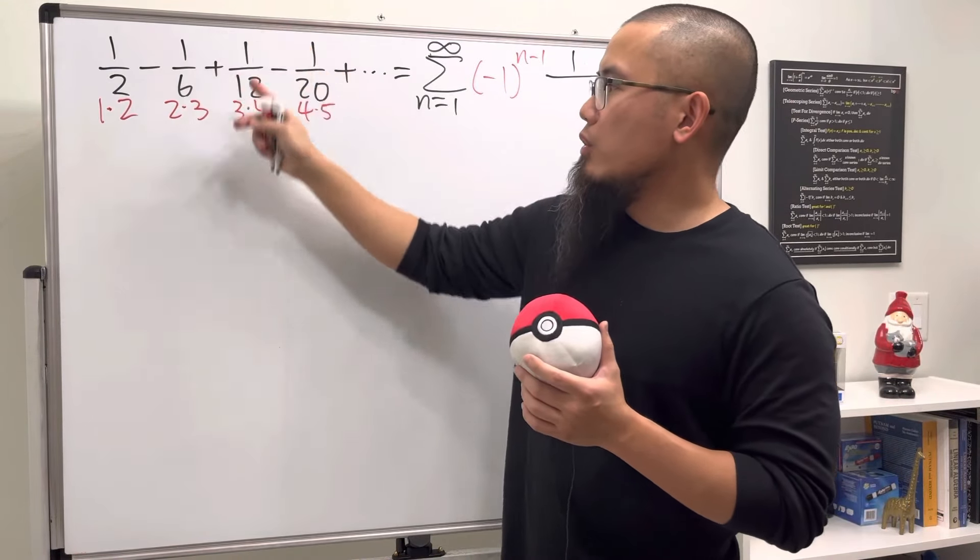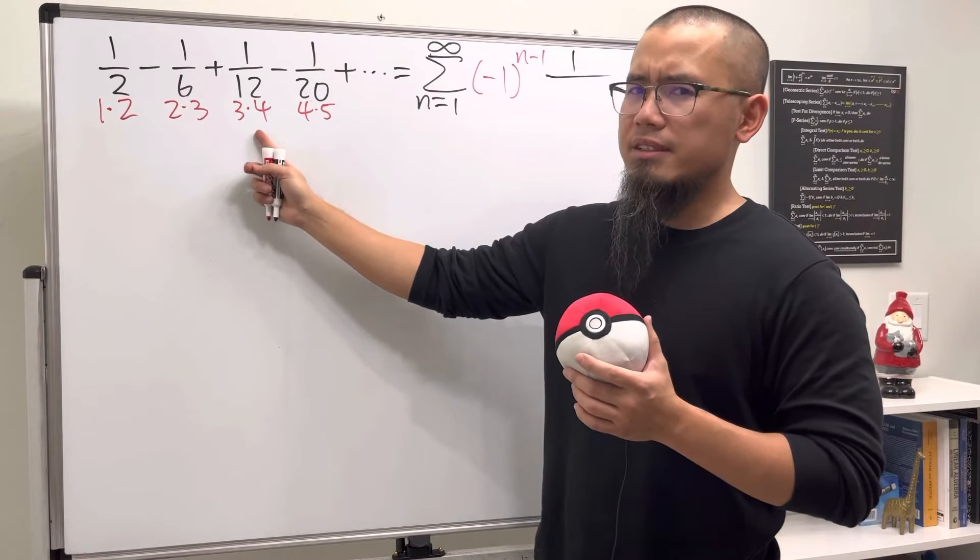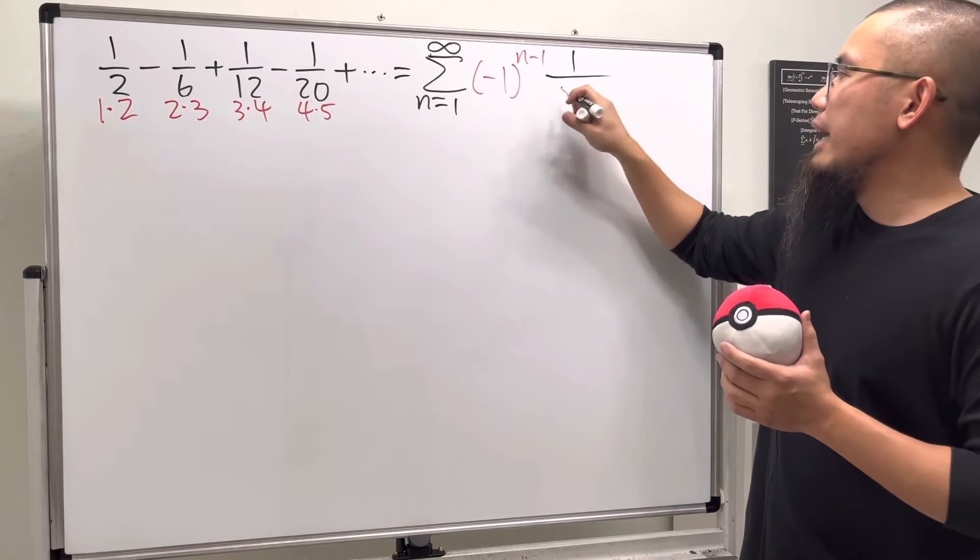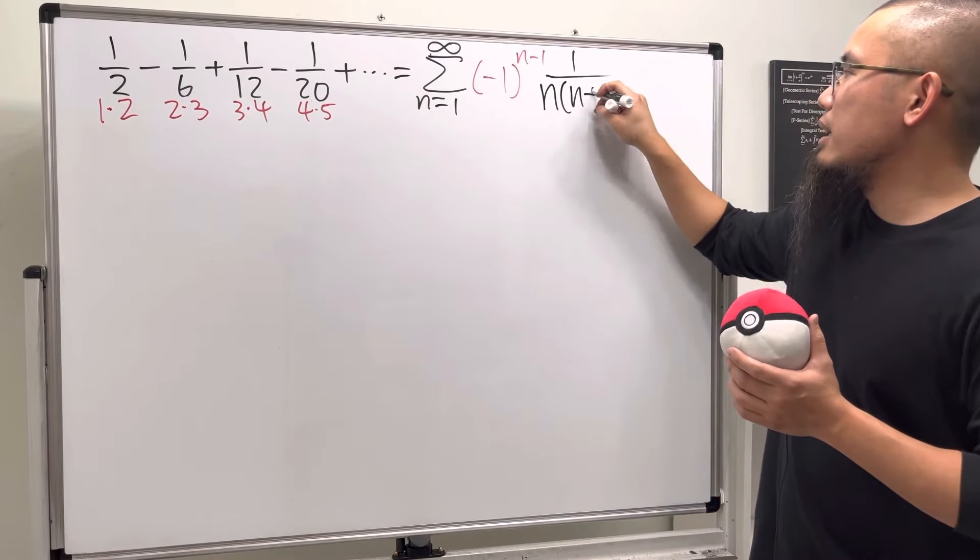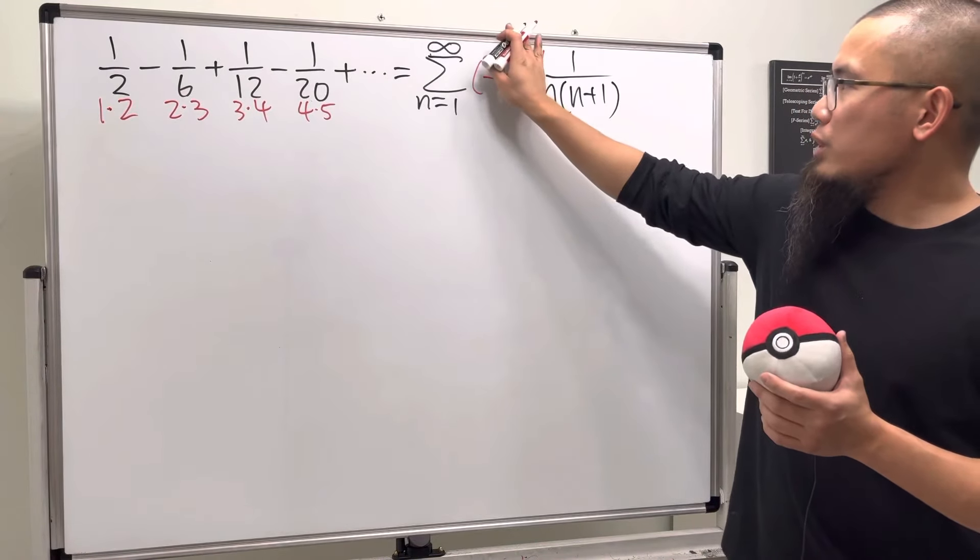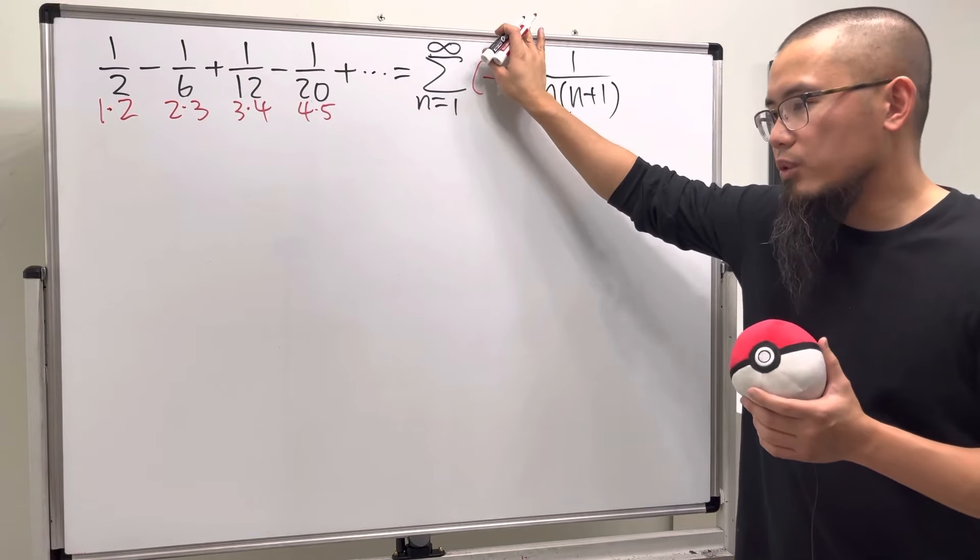On the third term, for example, we see that we have 3 times the next term. If we want to get a formula for the nth term, we just have n and then multiply by the next term, which is n+1. Notice if we don't have this alternating factor, then we know this is just a good old telescoping series.